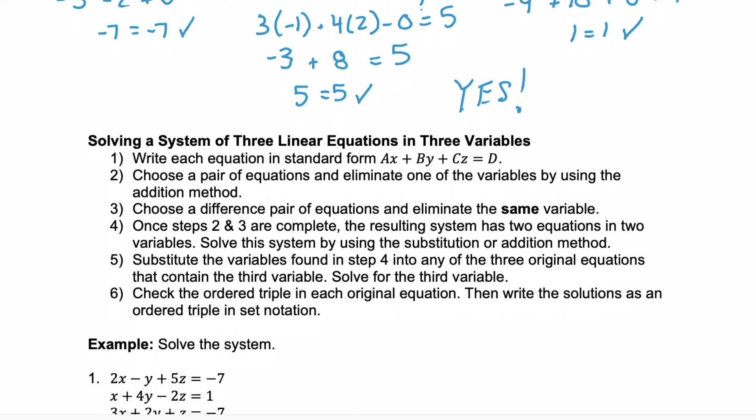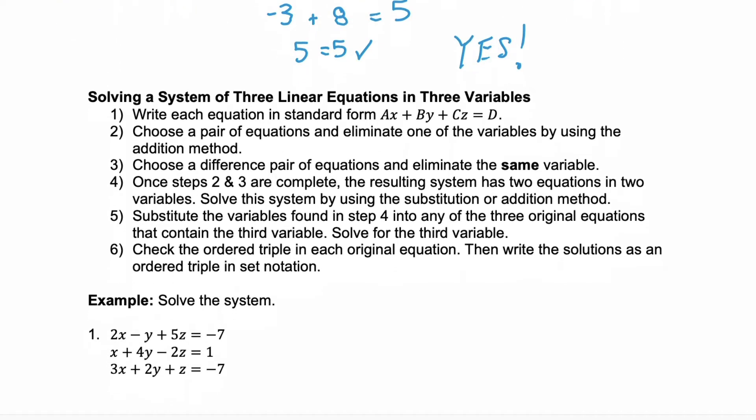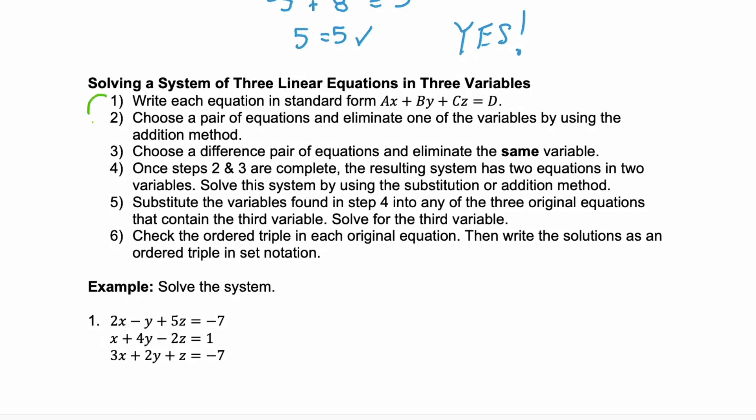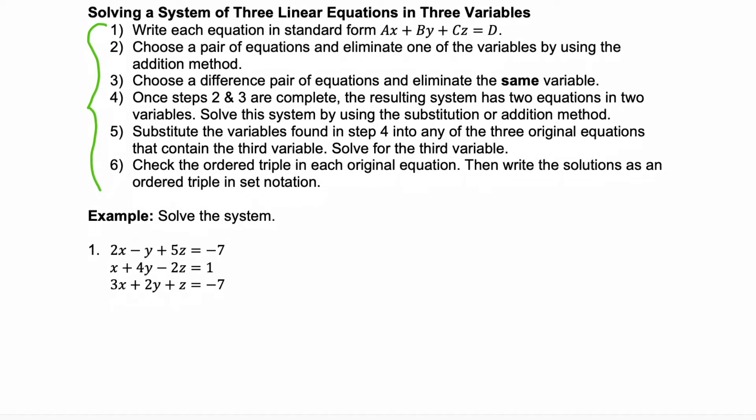Now, how do you find your own ordered triple when you have a linear equation in three variables? We have six steps to solving a system of linear equations in three variables, and we're going to go through these six steps as we work through example number one. The first step is to make sure that each equation is written in standard form — that means all of the variables are on the left-hand side and it's equal to a constant on the right-hand side. All three of our equations in our system are in standard form.